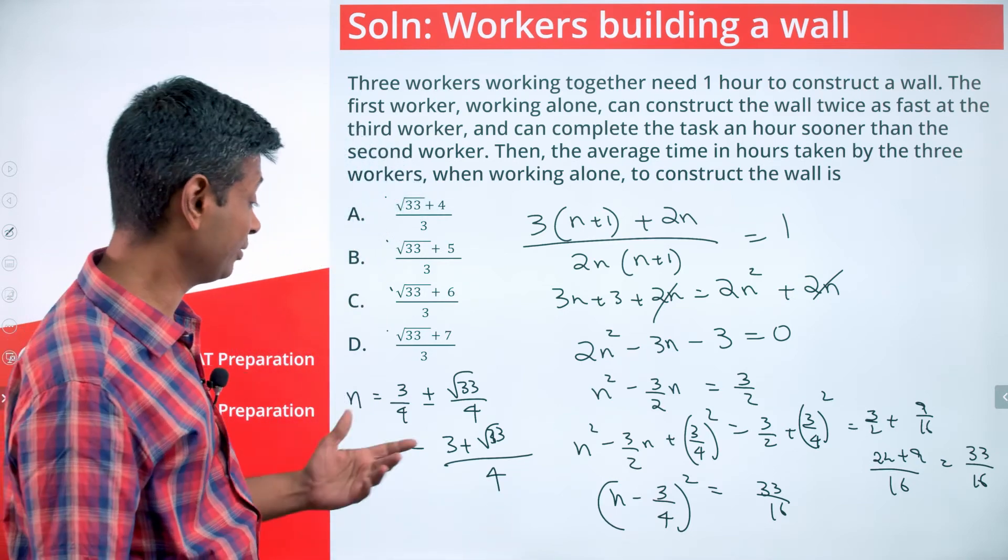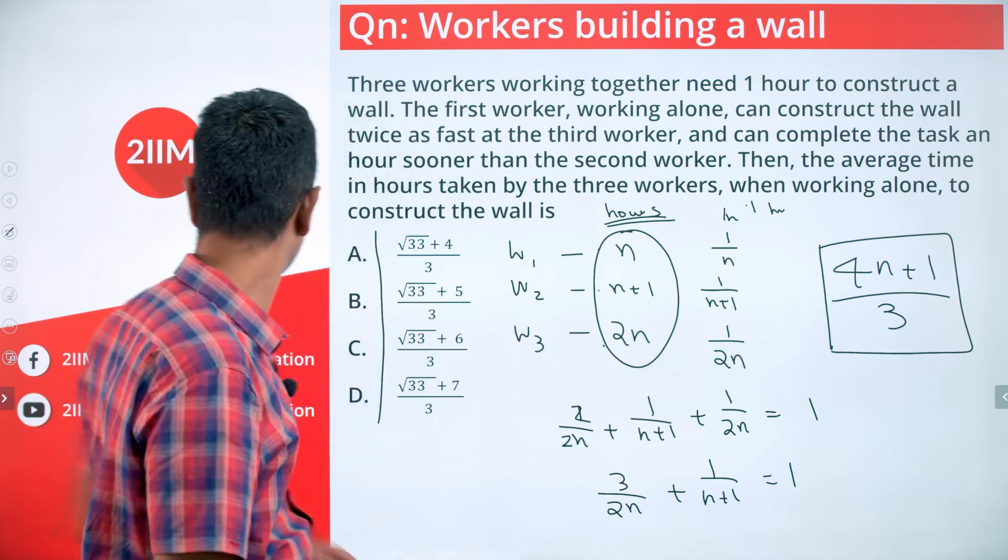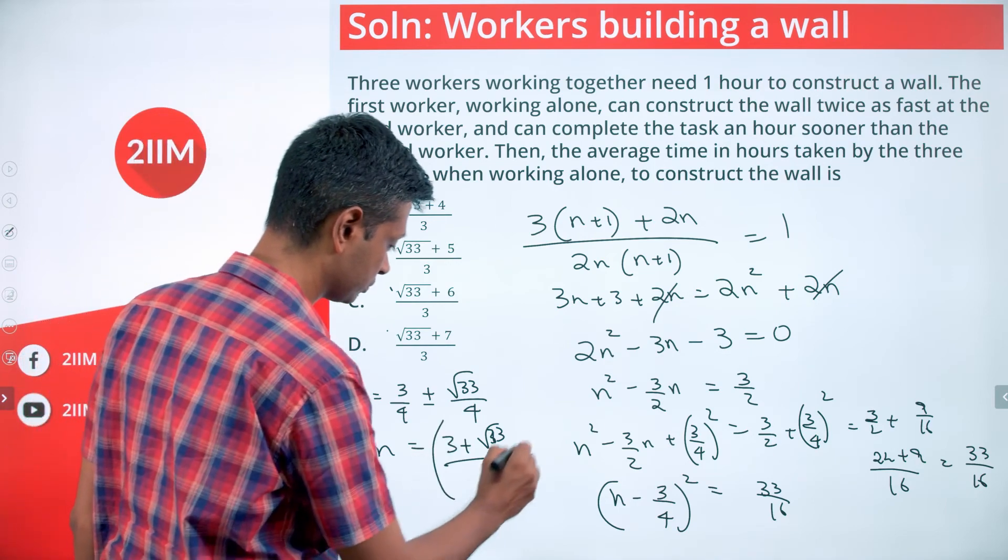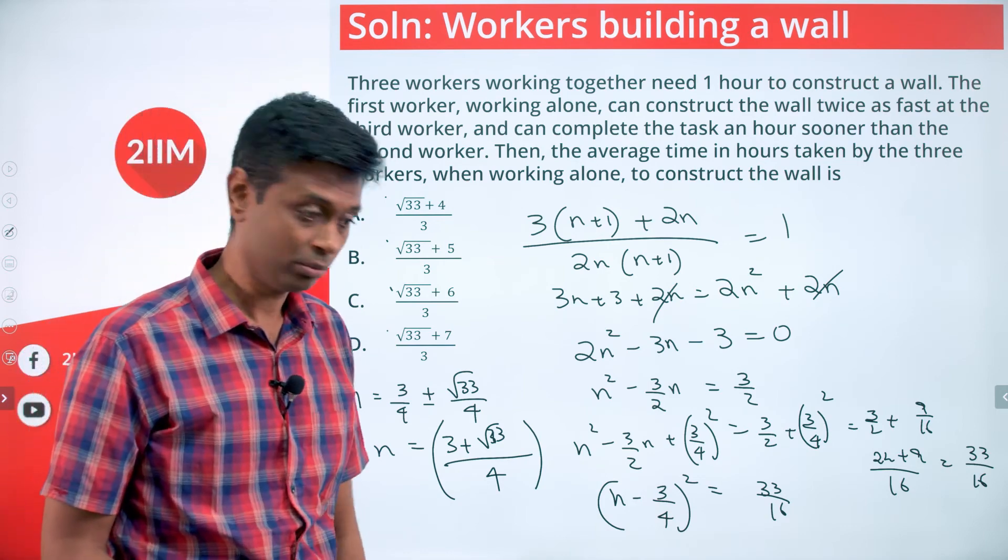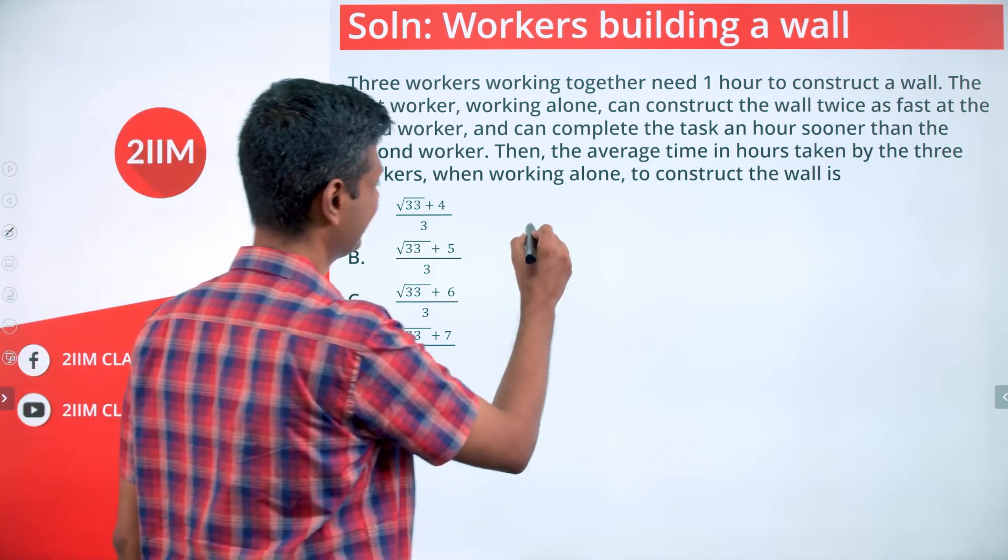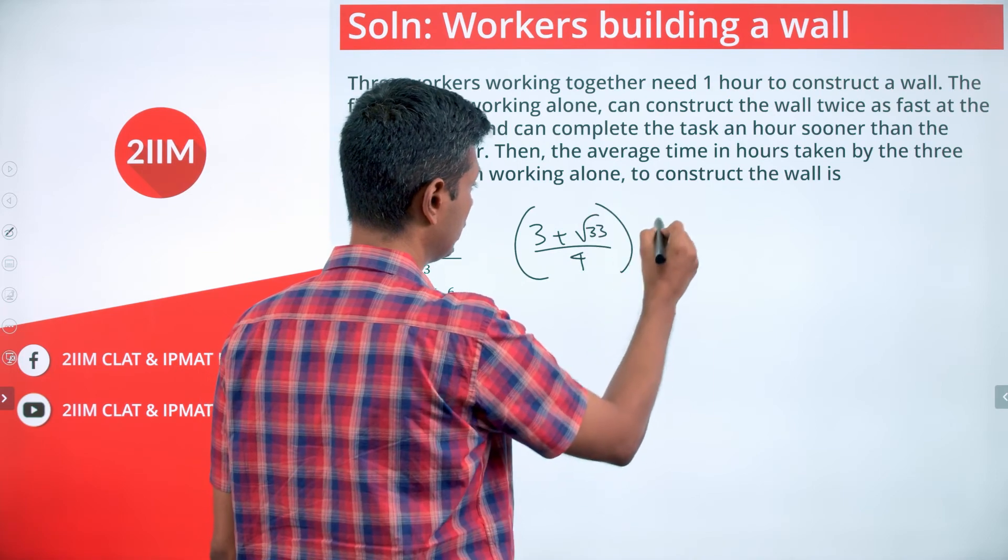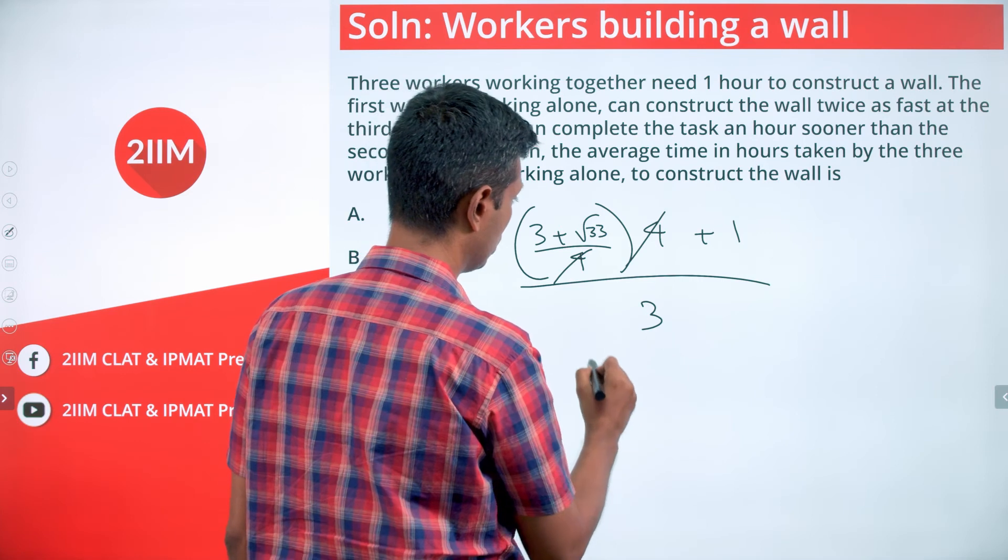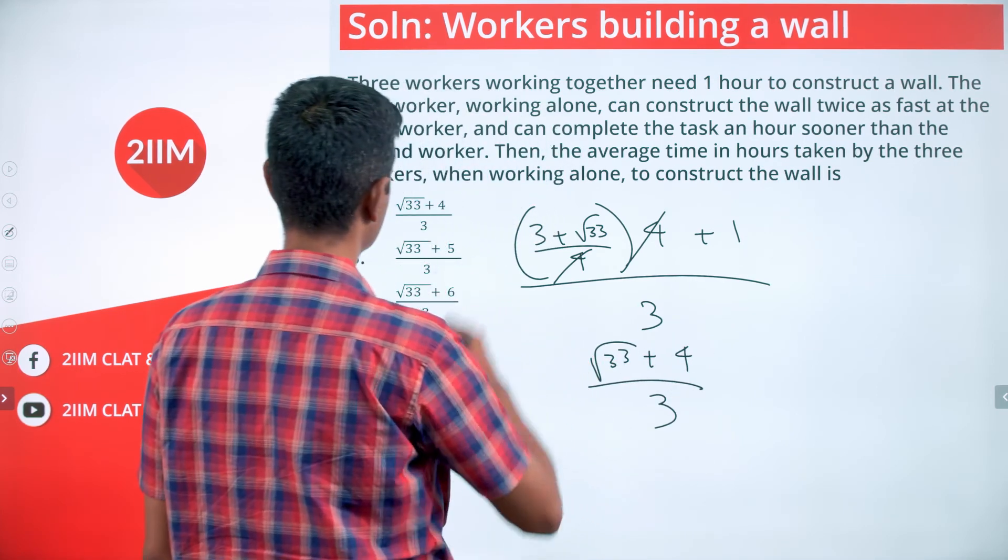What do we want to find? We want to find the average of those three things. We want to find (4n+1)/3. So 4n + 1 by 3, into four plus one by three, the four will get cancelled. So I'm going to simplify: (3 + √33)/4 into 4 + 1 divided by 3. This goes off. Or we have (√33 + 4)/3, which is this choice.